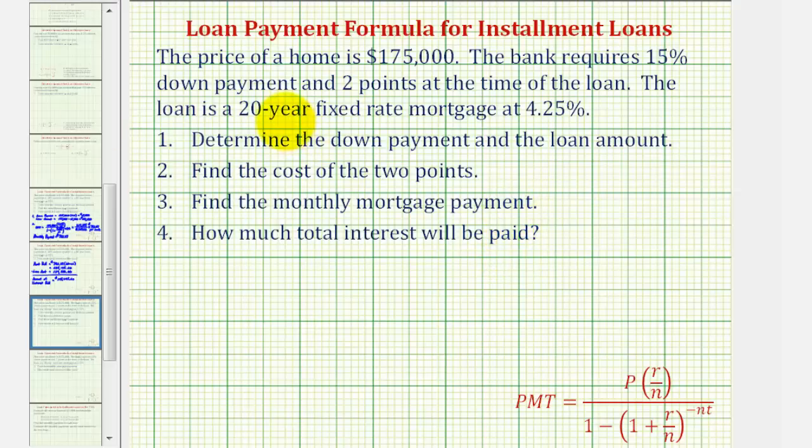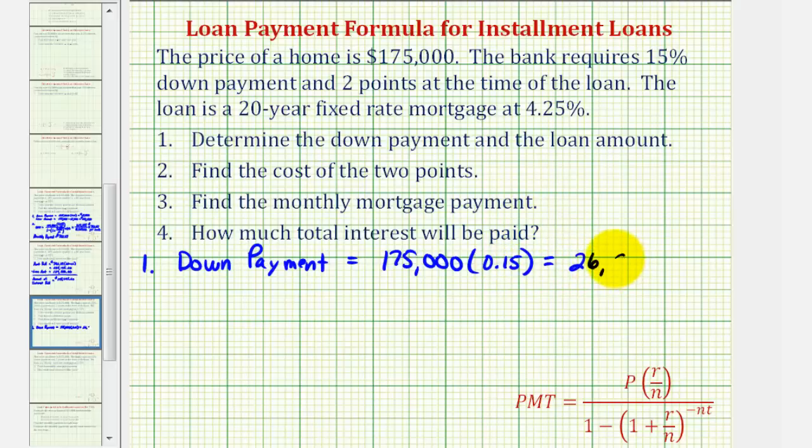So for number one, since the loan requires 15 percent down payment, we want to find 15 percent of $175,000. We can do this by multiplying $175,000 by 15 percent expressed as a decimal, which would be 0.15, which comes out to $26,250.